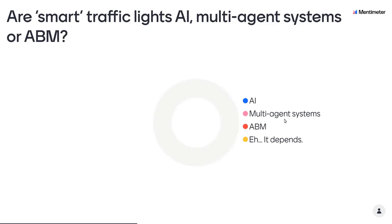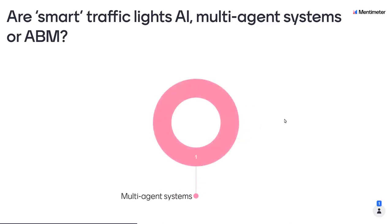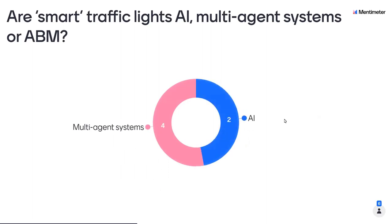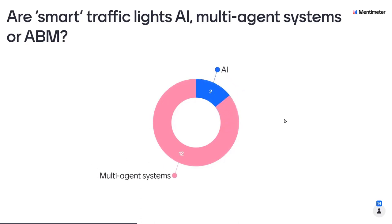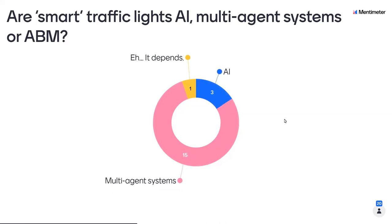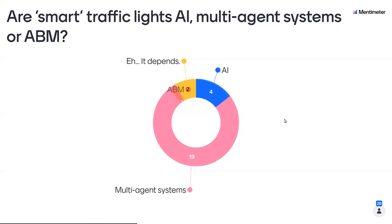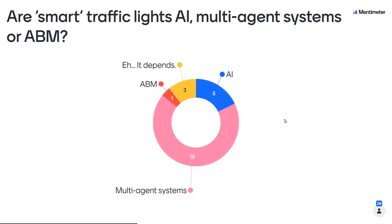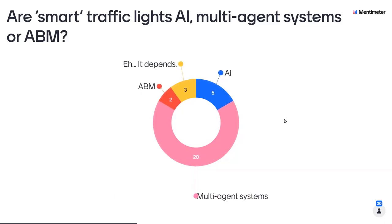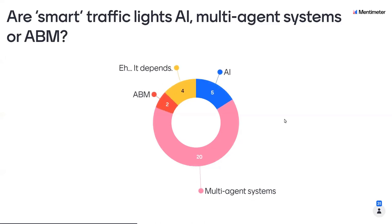Most people are going with multi-agent systems for smart traffic lights. In general, if there's lots of them and they're working together to achieve a problem, it's probably multi-agent systems. On the other hand, if you have a smart traffic robot standing there directing traffic with white gloves, that would be an AI. You certainly could build an agent-based model of traffic, but it would weirdly be an agent-based model of a multi-agent system. And proper scientists here — several saying 'it depends,' and you're right, it does.